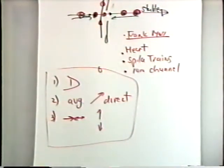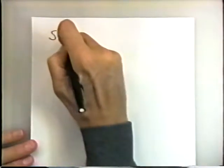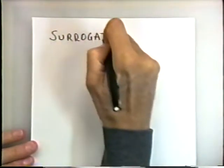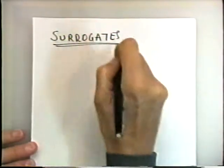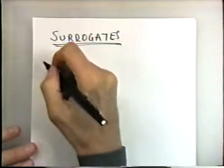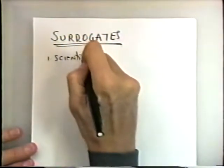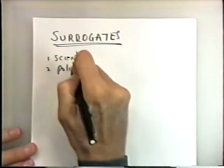Another technique that has become increasingly important is a technique involving surrogates. And let me talk about this both in a scientific sense and in what I'll call a political sense.